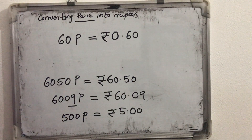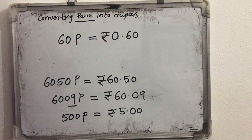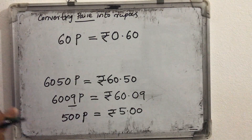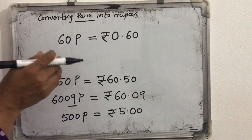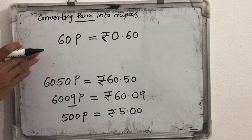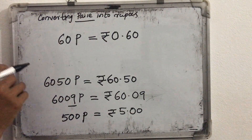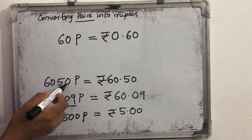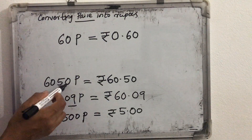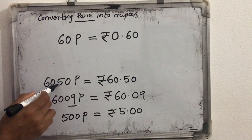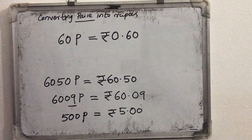This way we can convert any number of paise into rupees. We are doing division — the given paise we are dividing by 100. But there is no need to always do that division; from the number itself we can write the direct answer. Before the last two digits we insert the decimal point — so that much will be paise and the other digits will be rupees.